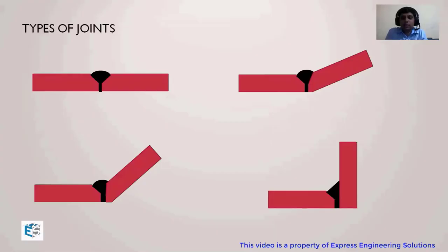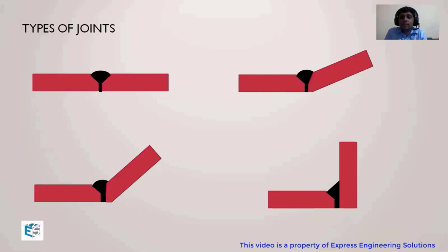Looking at the welding joints shown on screen, the first type appears to be a butt joint. The second one — whether it's a corner, angle, or some other type — is not immediately clear. So how do we come to know the correct definitions of these joints? Is it by experience, or because someone told us?